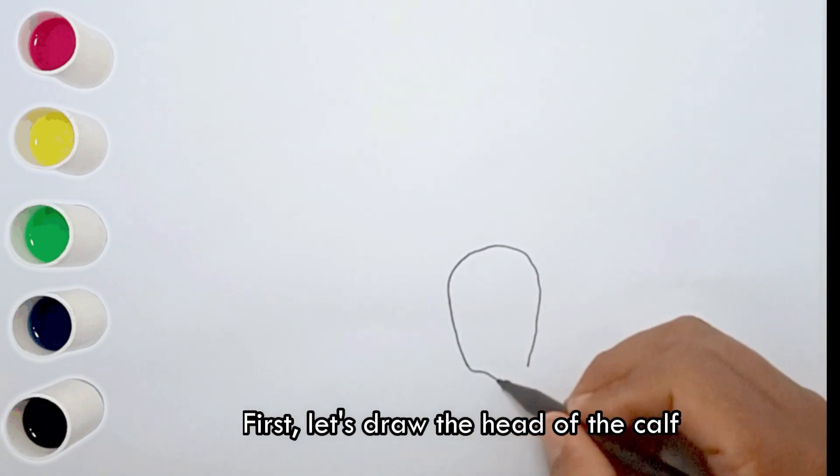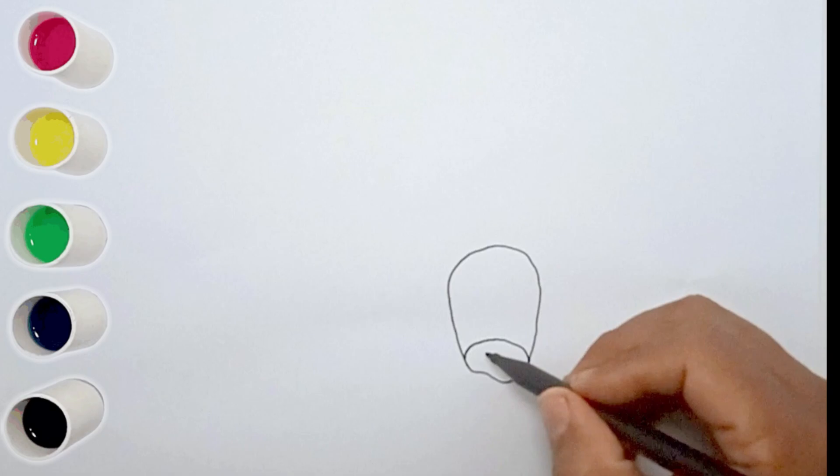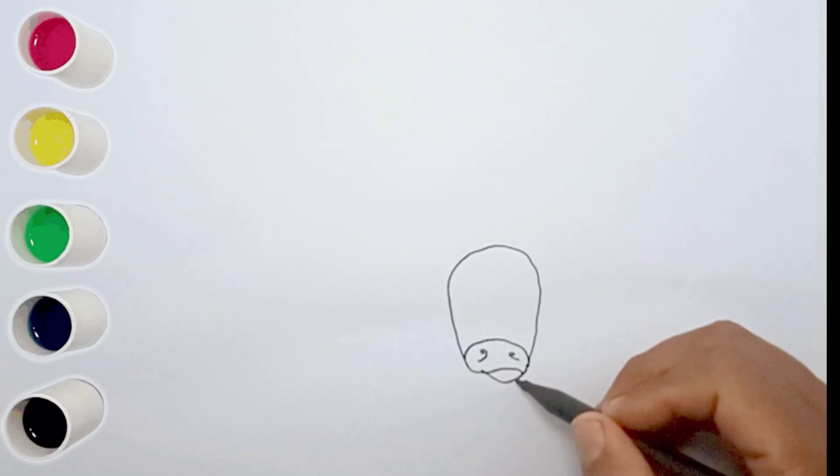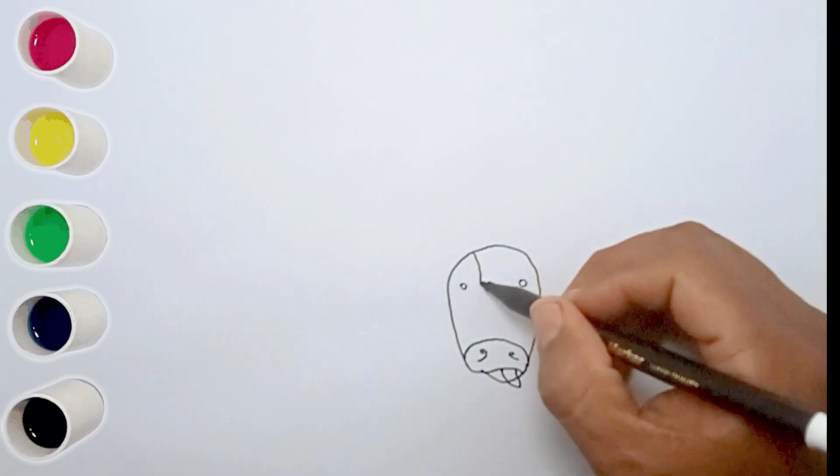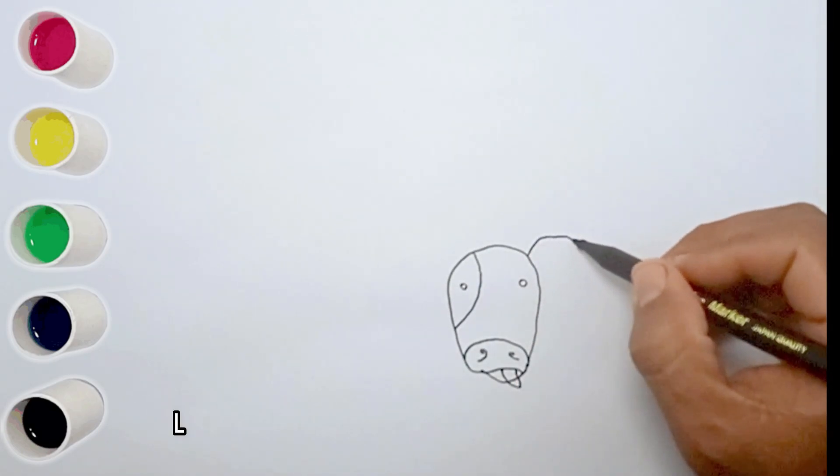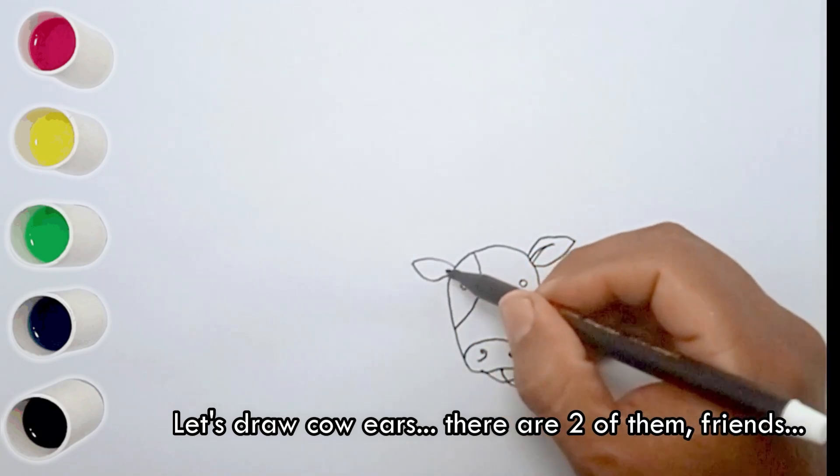First, let's draw the head of the calf. Let's draw cow ears. There are two of them, friends.